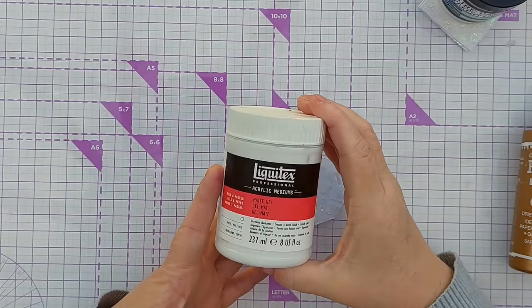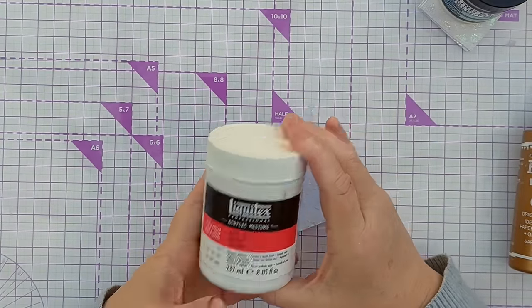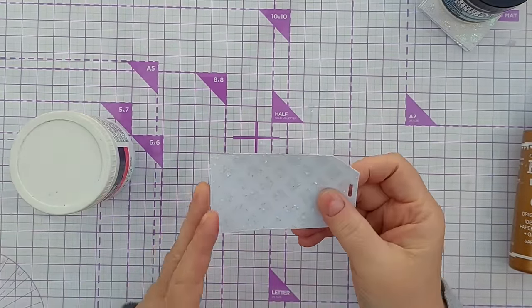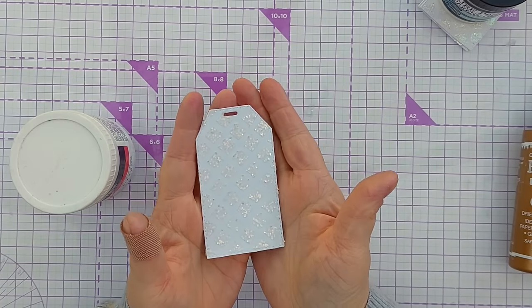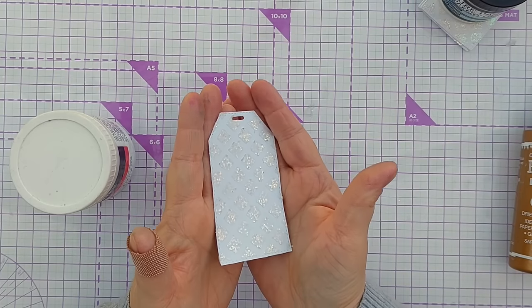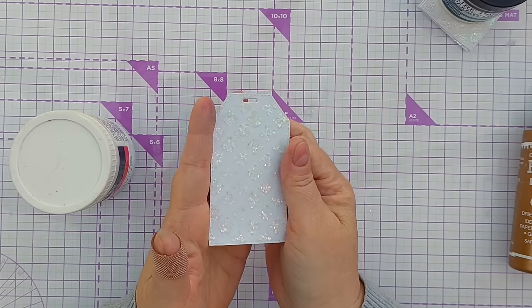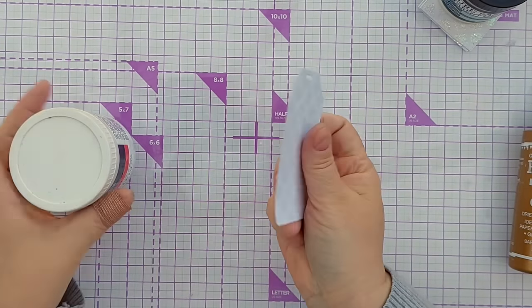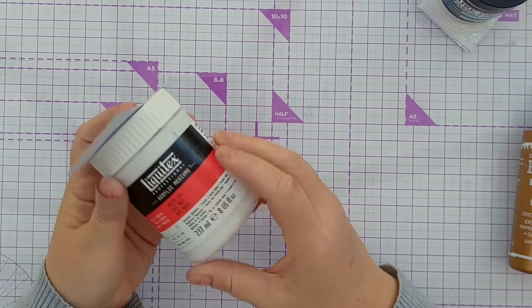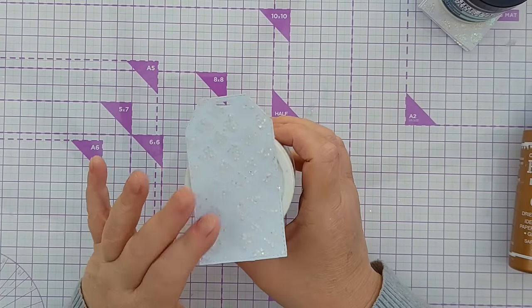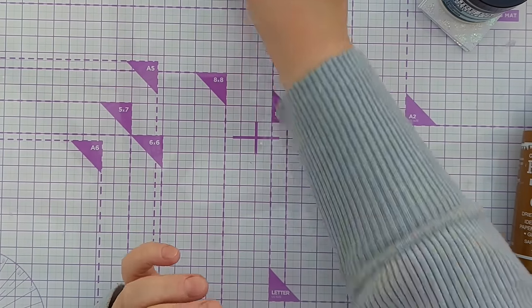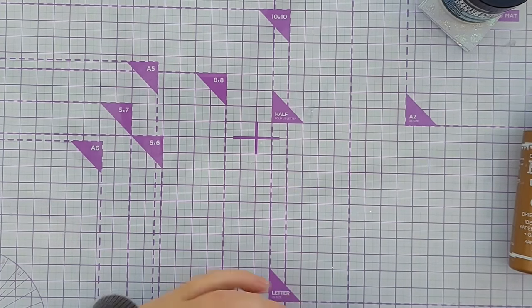The Matte Gel Medium dries matte as you might expect, so it's not a glossy finish, but it gives you this beautiful frosted appearance. If you want a frosty clear glittery effect, then Matte Gel Medium—there are other brands, doesn't have to be Liquitex—is really good.